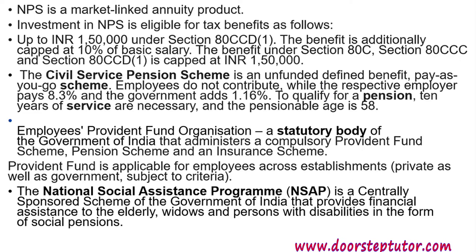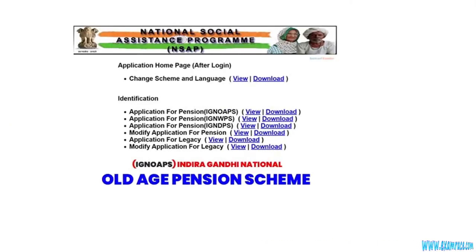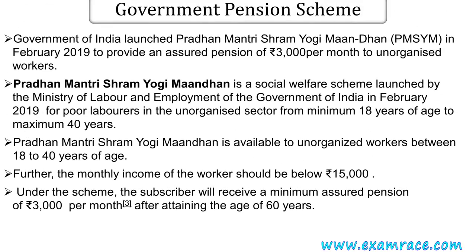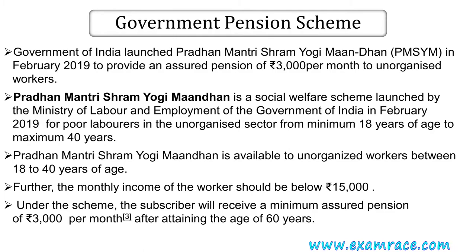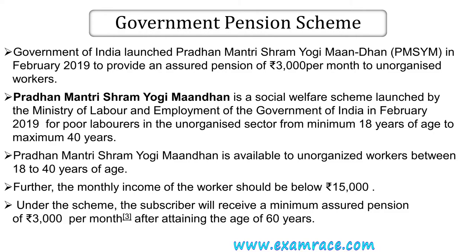The National Social Assistance Programme (NSAP) is a centrally sponsored scheme of the Government of India which provides financial assistance to the elderly, widows, and persons with disabilities in the form of social pensions — for example, the Old Age Pension Scheme operated under the Indira Gandhi National Old Age Pension Scheme. The Government Pension Scheme: the Government of India launched Pradhan Mantri Shram Yogi Mandhan in February 2019 to provide an assured pension of Rs. 3,000 per month to unorganized workers in India.